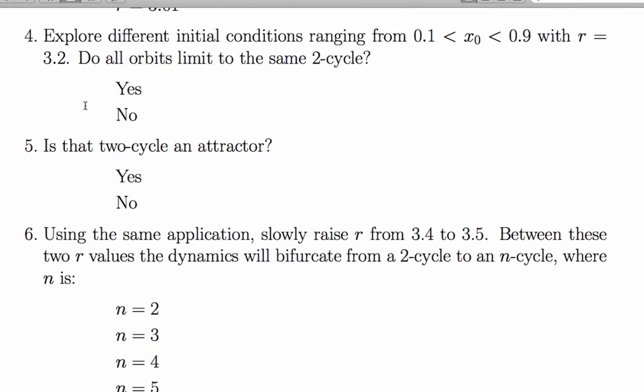That was the range that the problem suggested that you explore, and it sure looked like all orbits limited to the same 2-cycle. So the answer is yes. And if an orbit limits to some subset of the state space, that subset of the state space is an attractor. So indeed that 2-cycle is an attractor.